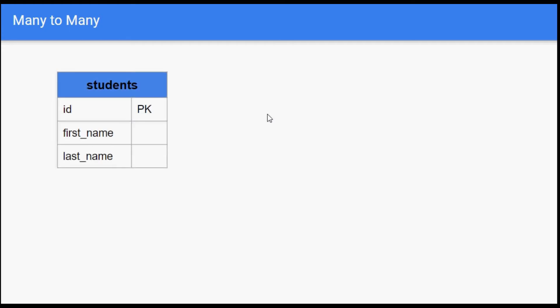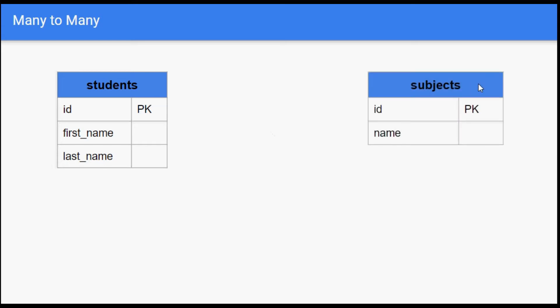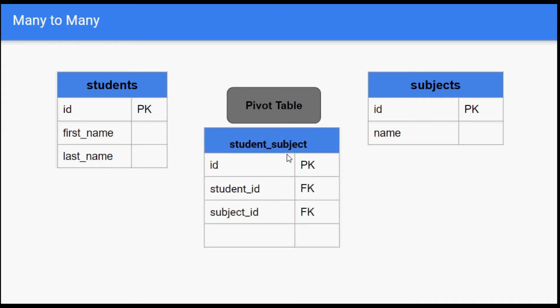In this video we will discuss many-to-many relationship, which in Laravel is also known as belongs-to-many relationship. Let's assume we have a students table and a subjects table with id as primary key. One student can subscribe to multiple subjects, and other students may also subscribe to the same subjects. We connect these two tables with a pivot table that has foreign keys from both tables. Notice the naming convention: it is formed by combining the two table names in alphabetical order, both singular — so 'student' comes before 'subject'.